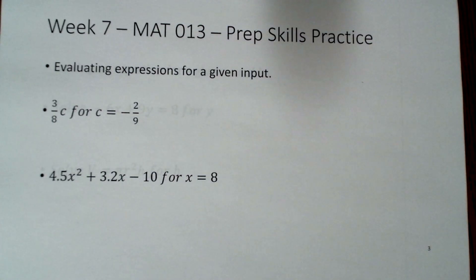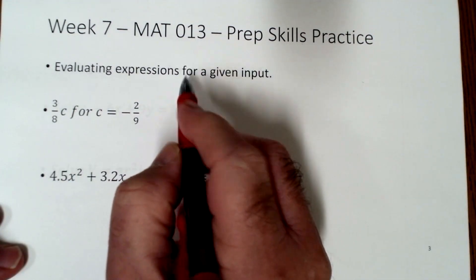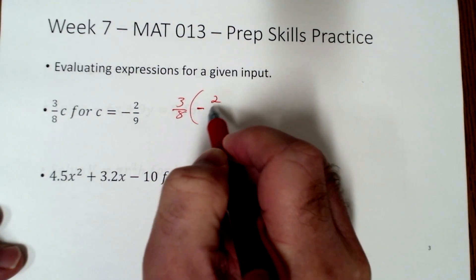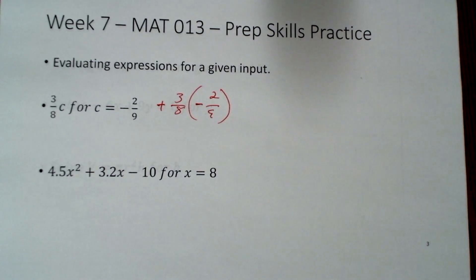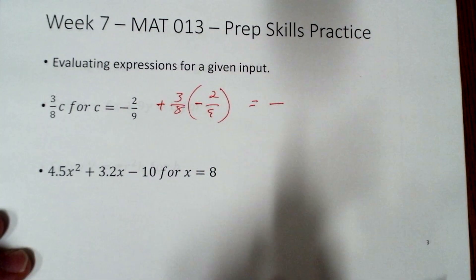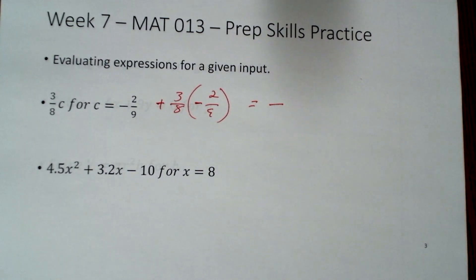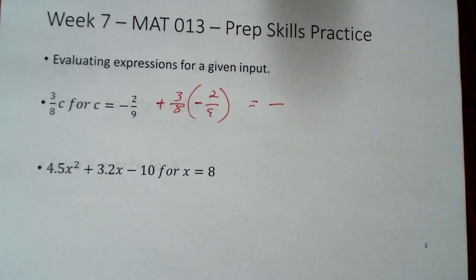Next, we evaluate with c equals negative 2 ninths. Substituting, we get 3 eighths times negative 2 ninths. We know one is positive and the other is negative, so the answer will be negative. For multiplying fractions, we do not need a common denominator — we multiply straight across. And we always reduce our final answer to simplest form.